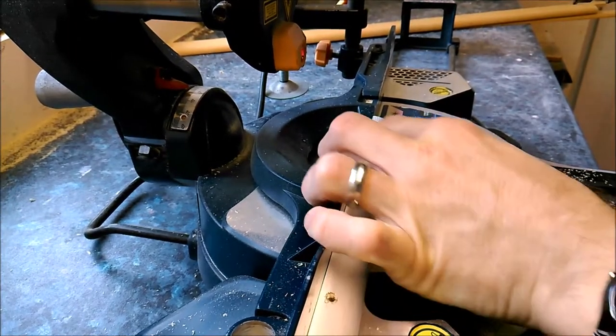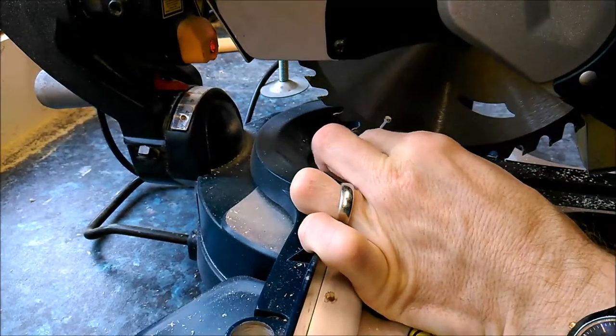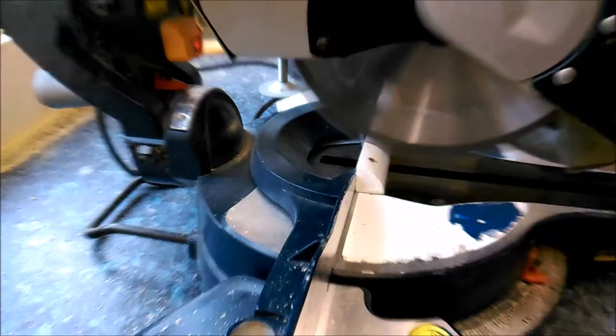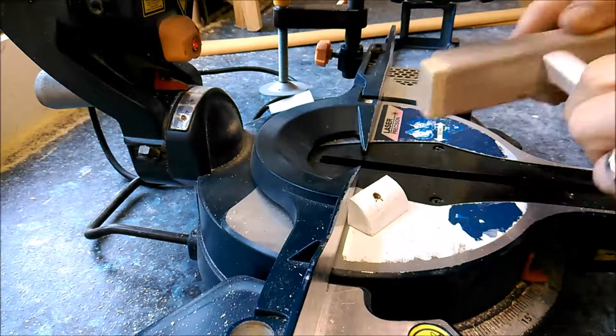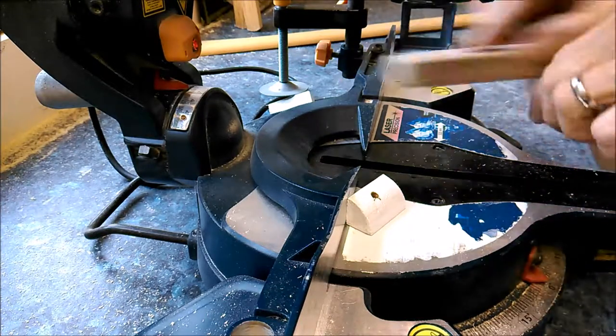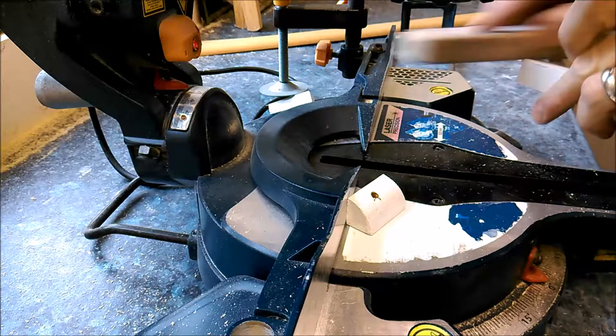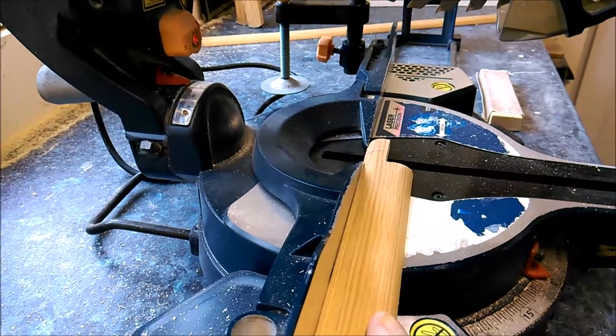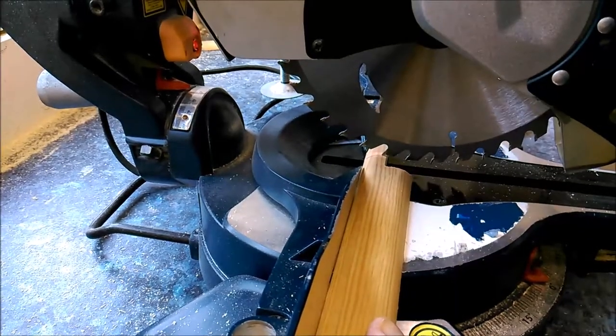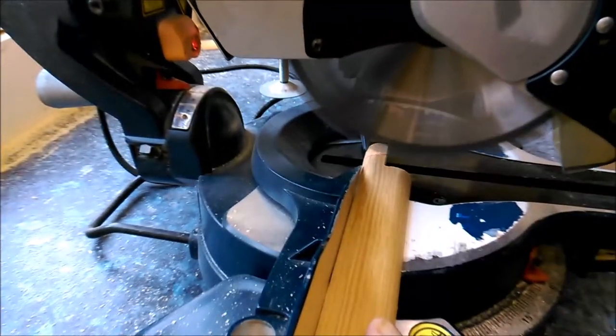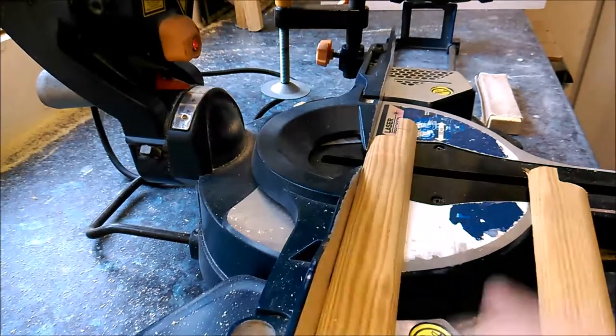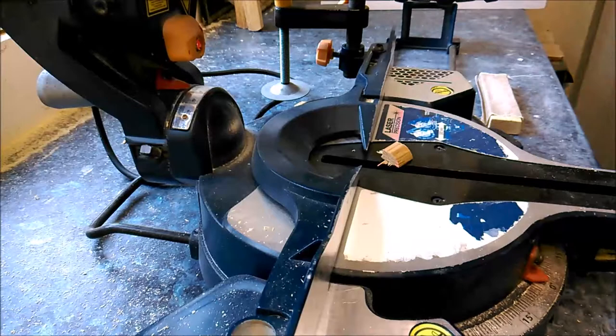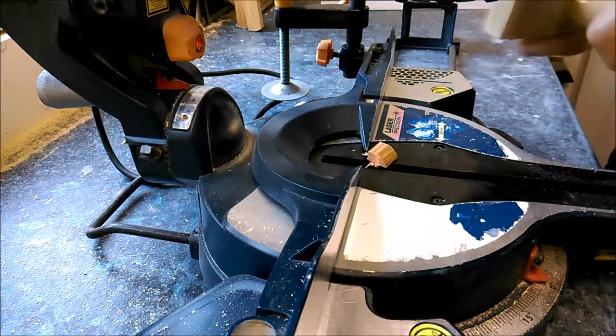To cut the quarter round beading and trace the edges of the double round side trims, I use my chop saw.